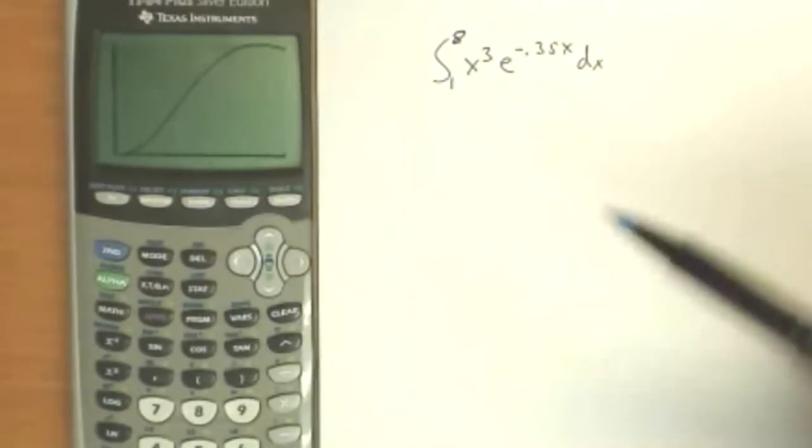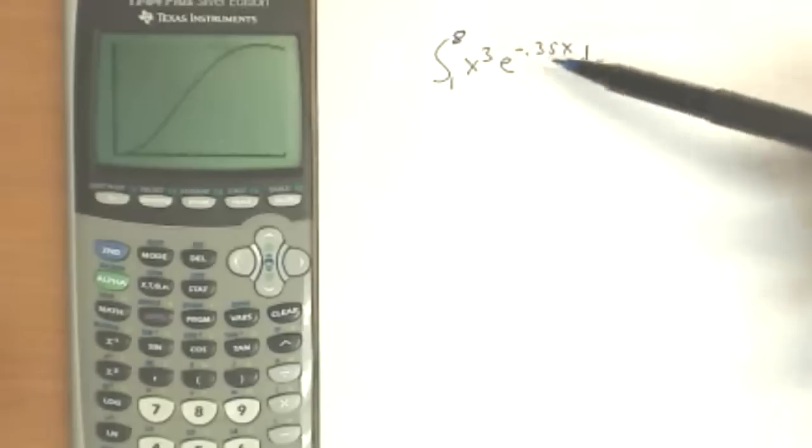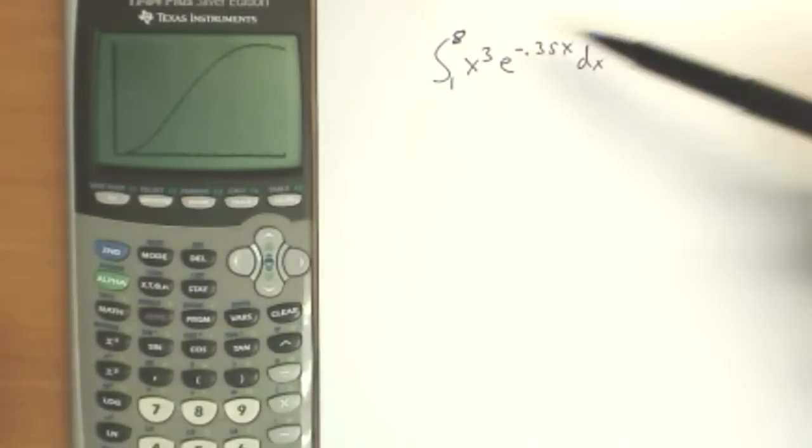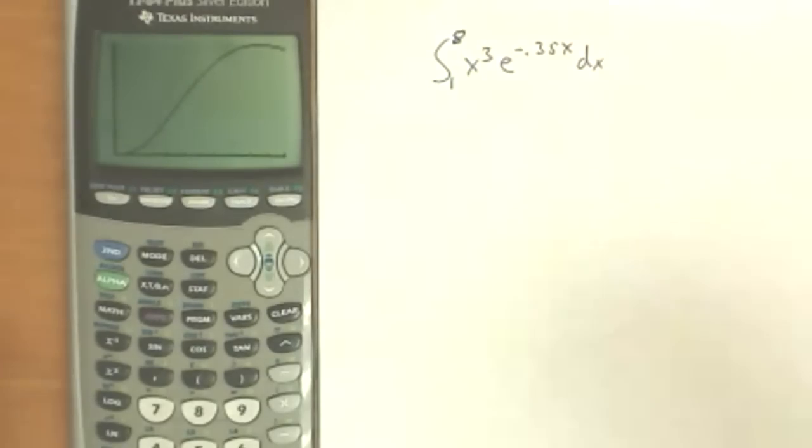Now to get the actual number answer, and recall, when we don't have limits, the answer to an integral is a function. It's the antiderivative of this, whose derivative is this. But in this case, we want a number. We want to find the area under the curve from 1 to 8.